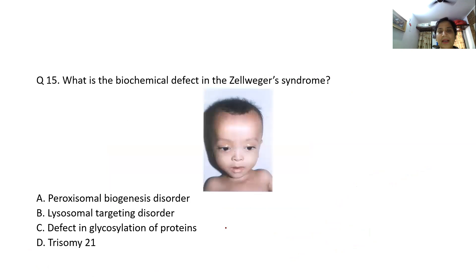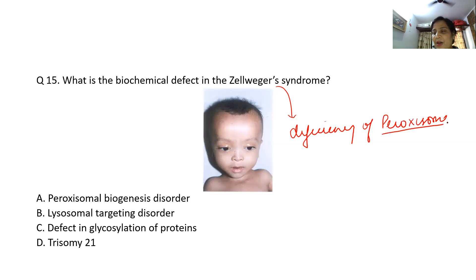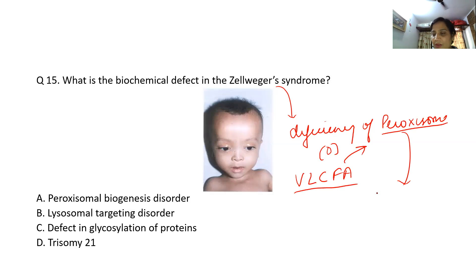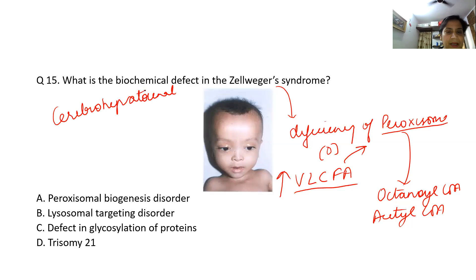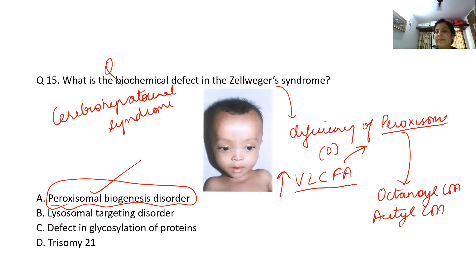What is the biochemical defect in Zellweger syndrome? Zellweger syndrome is due to deficiency of peroxisomes. Peroxisomes are the site for beta-oxidation of very long chain fatty acids (VLCFA), which produces one molecule of octanoyl-CoA and one molecule of acetyl-CoA. If peroxisomes are deficient, very long chain fatty acids accumulate — which is why Zellweger syndrome is also known as cerebrohepatorenal syndrome. The answer is peroxisomal biogenesis disorder.